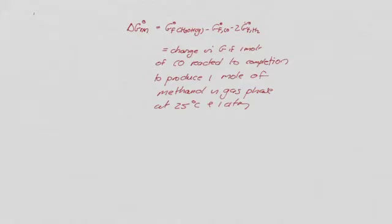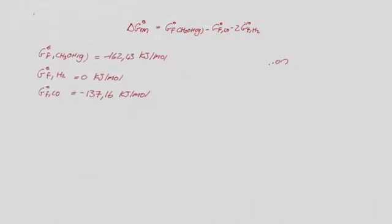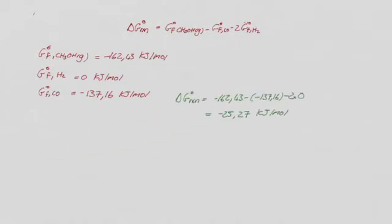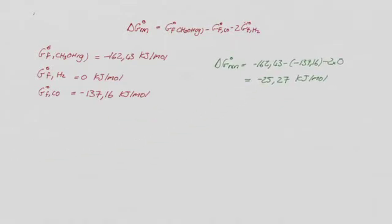If we go and look in our data tables and find values, we see that the G of formation of methanol gas is minus 162 kilojoules per mole, G of formation of hydrogen is zero, and G of formation of CO is minus 137.16 kilojoules per mole. Substituting that in, we get that ΔG° is the G of the methanol minus the G of the CO — that's a minus — minus 2 times zero, which gives us about minus 25 kilojoules per mole.